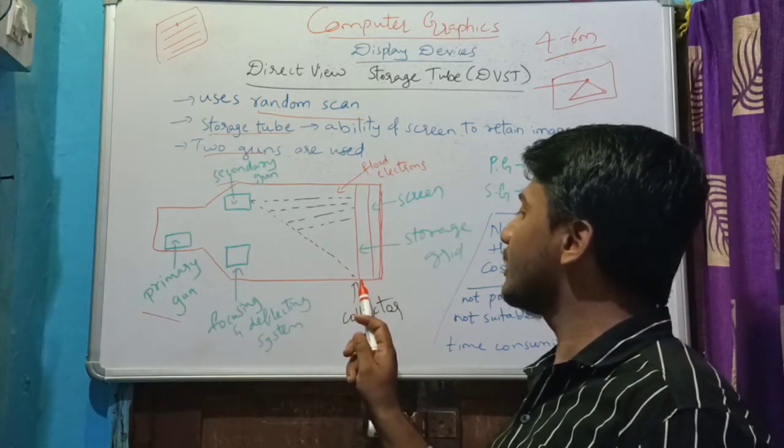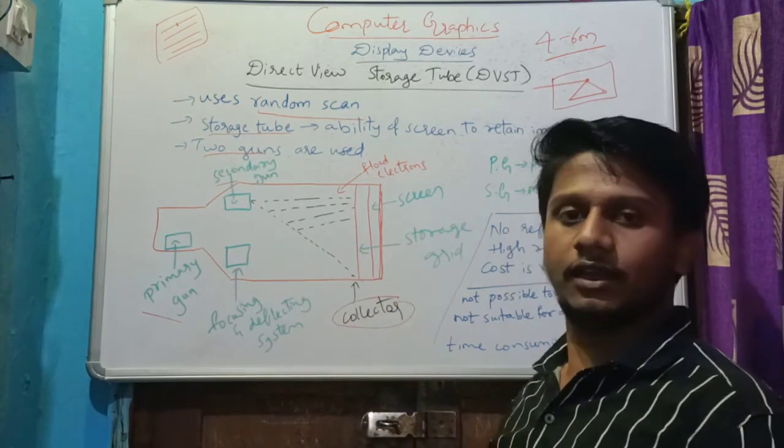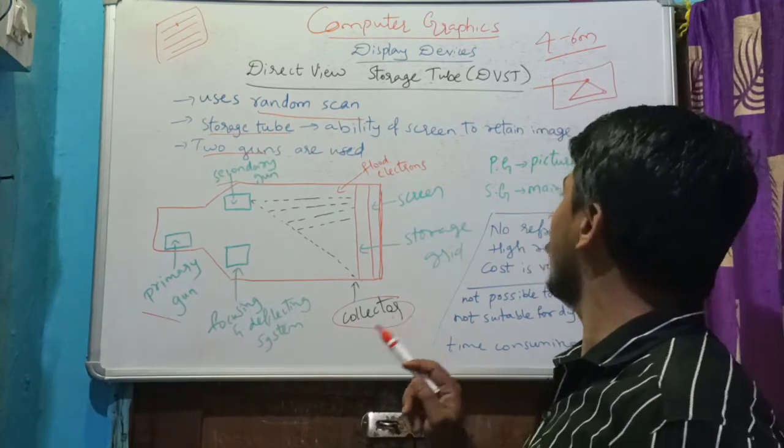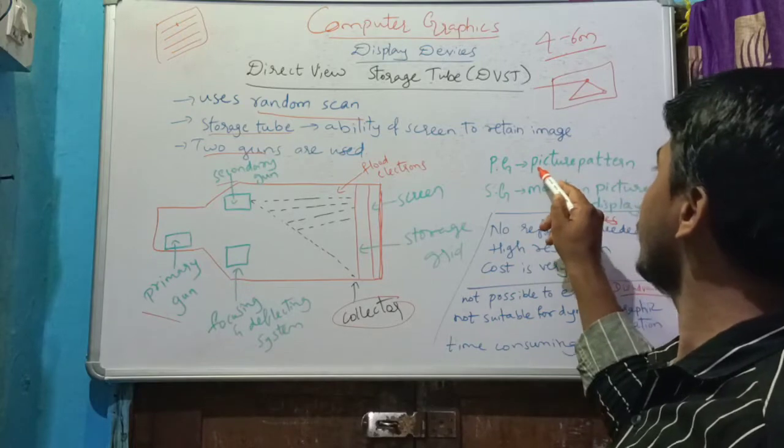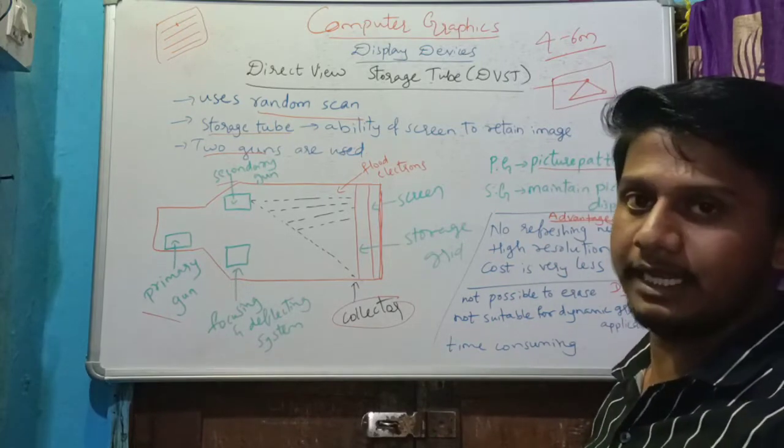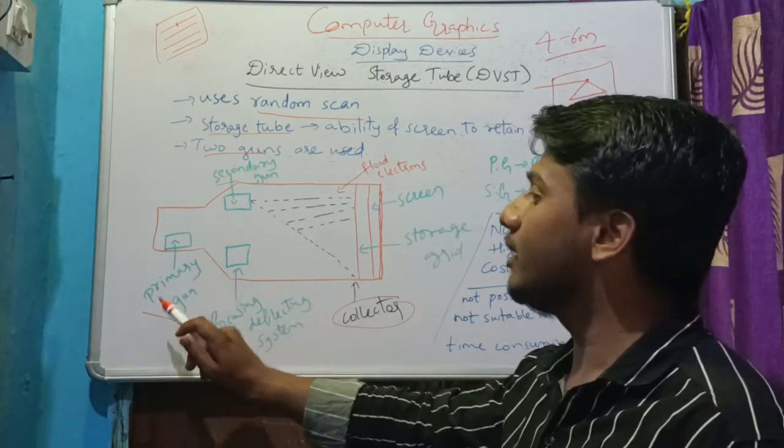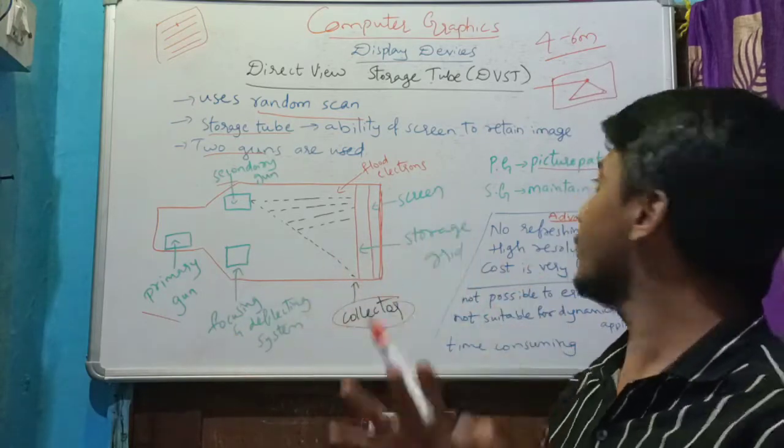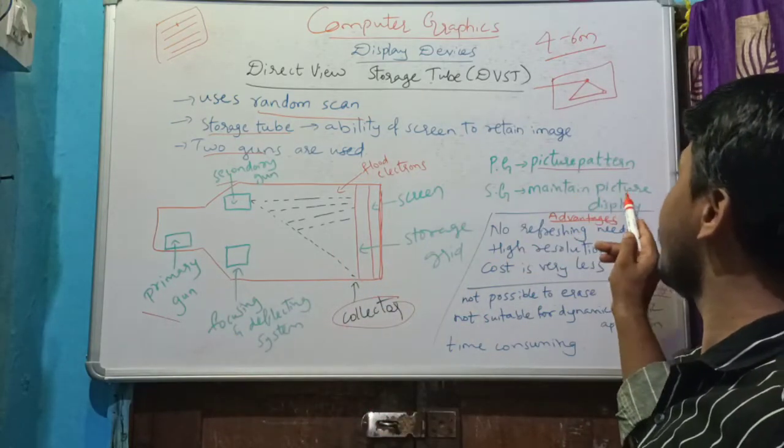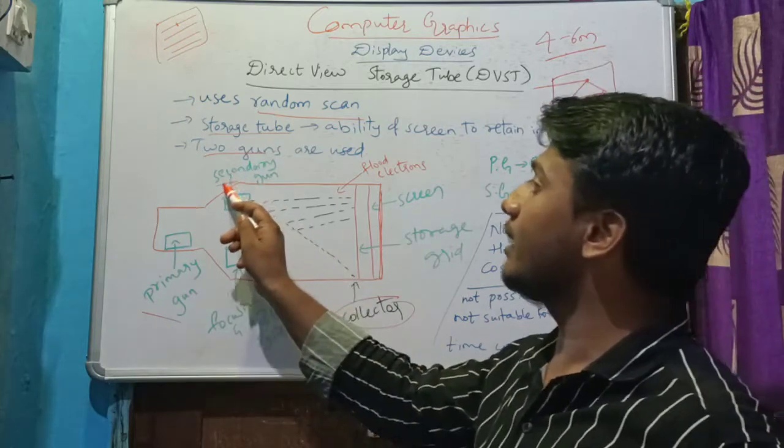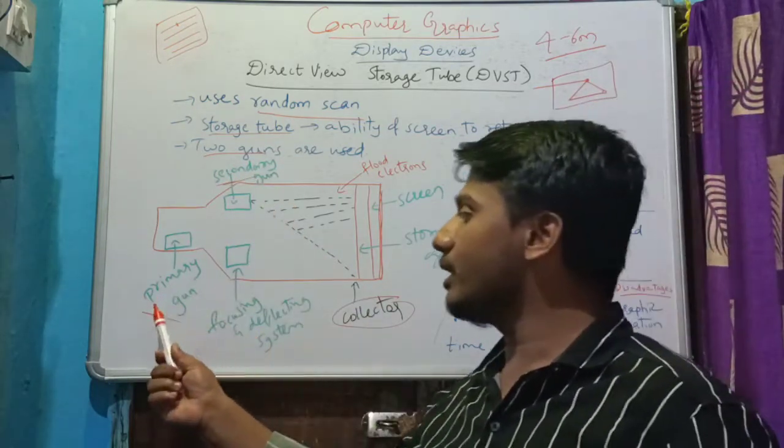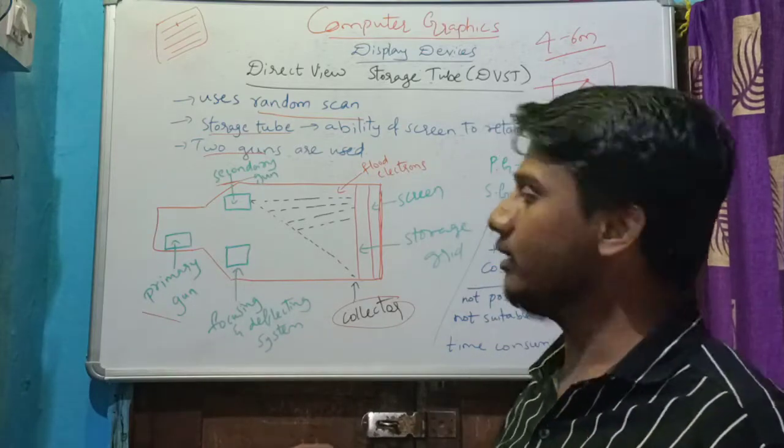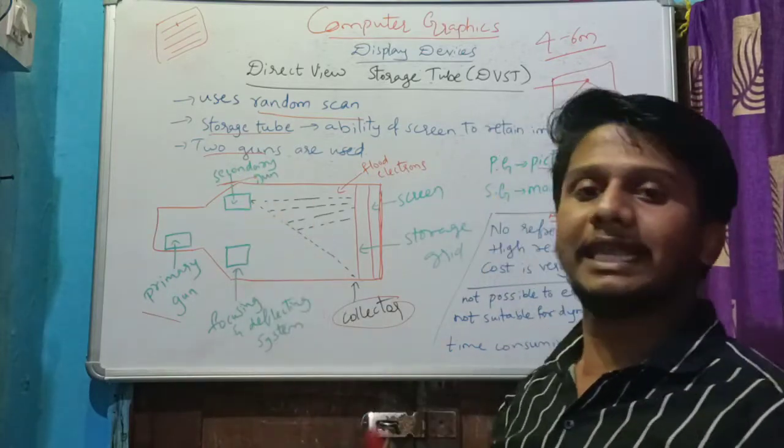Here, this primary gun will be used for picture pattern. The primary gun will store the picture pattern and the secondary gun will maintain the picture display. Remember, primary gun will store the picture pattern whereas the secondary gun will maintain the picture display.